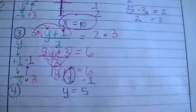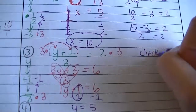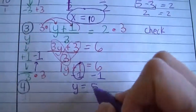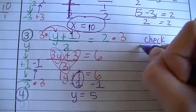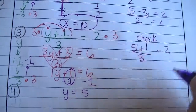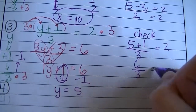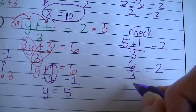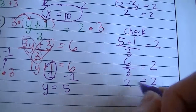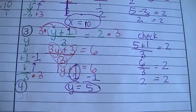Before I circle it, I want to check it. Rewrite the green stuff but instead of writing the letter y, put the 5 in its place — that's called substitution. 5 plus 1 is 6, then divide by 3. 6 divided by 3 is 2. 2 equals 2. Since that's a balanced equation and both sides equal each other, that's the correct answer.